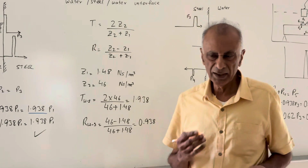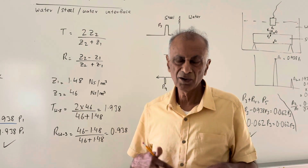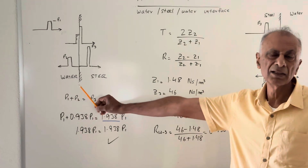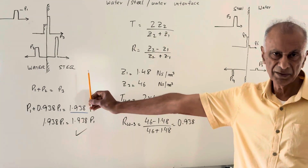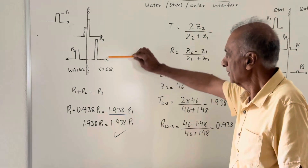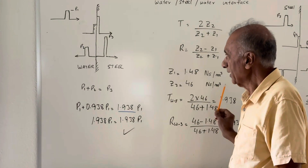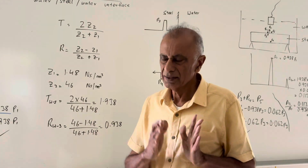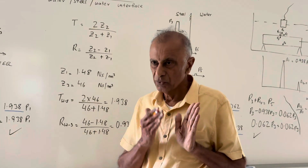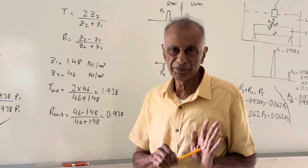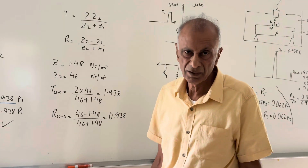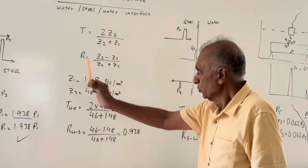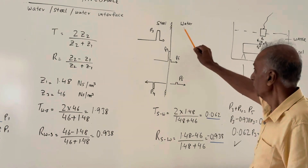One can ask: how come the pressure of the transmitted pulse is almost double the pressure of the incident pulse? The reason is the differences in the elastic modulus of water and steel — the elastic modulus of steel is quite high, so when the pulse is transmitted the pressure increases. We consider pressure because pressure is what is picked up by the UT probe; it gets transferred into displacement, and then the UT crystal converts that displacement into a voltage pulse which goes into the UT receiver.